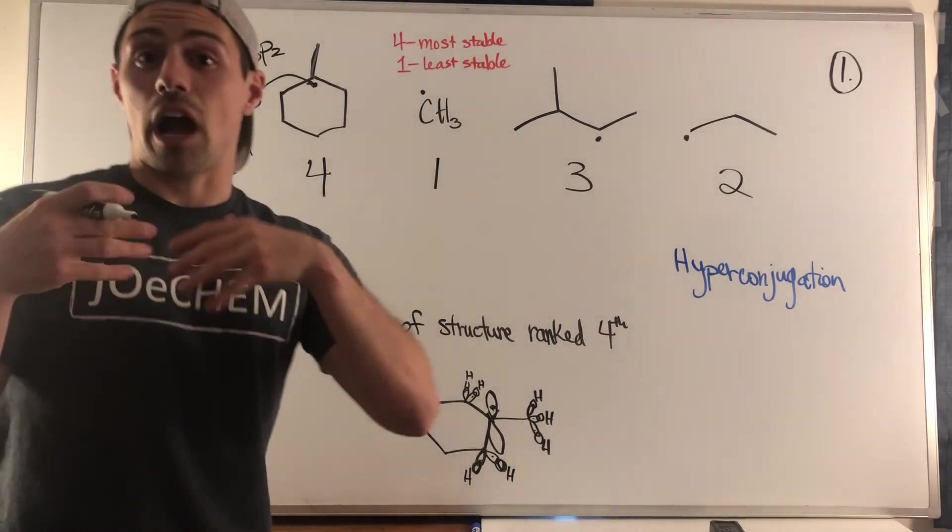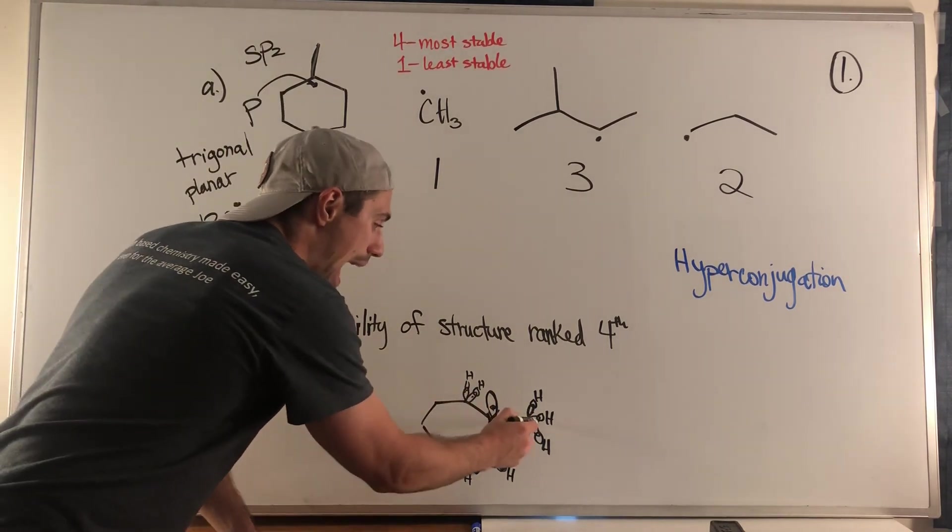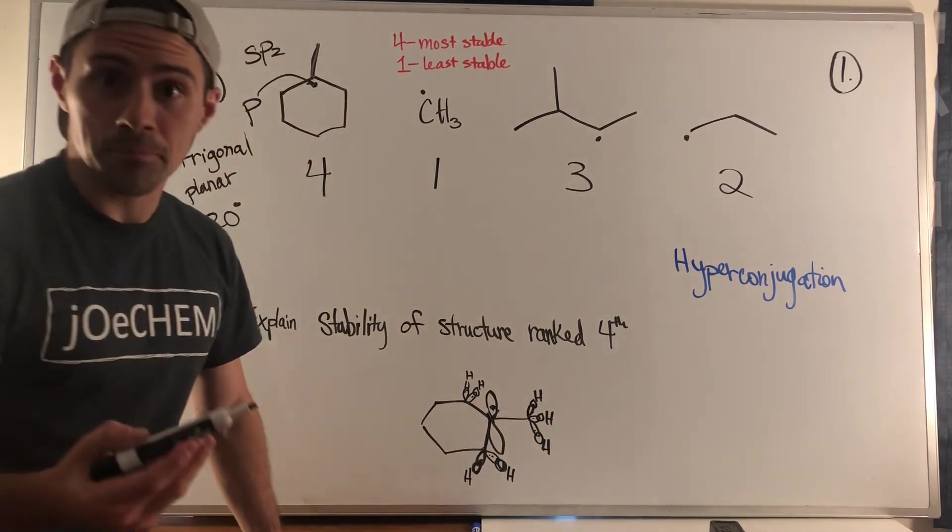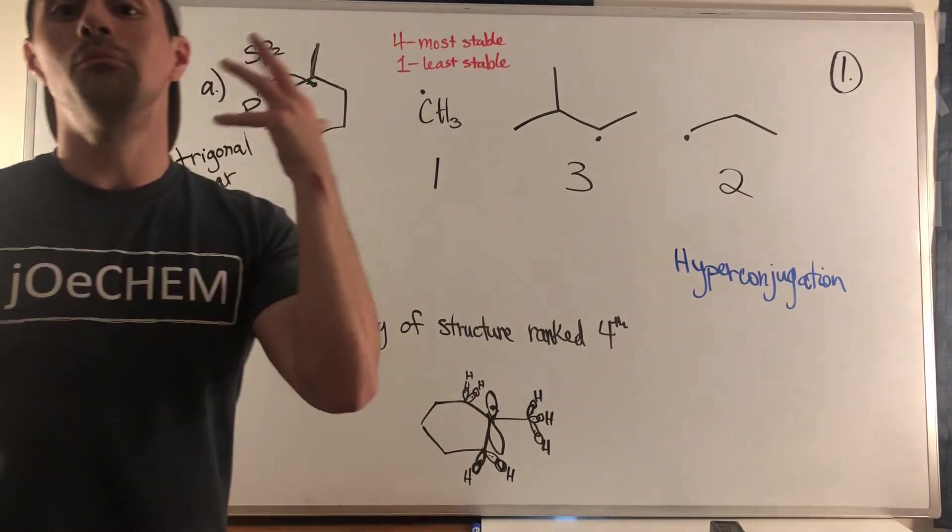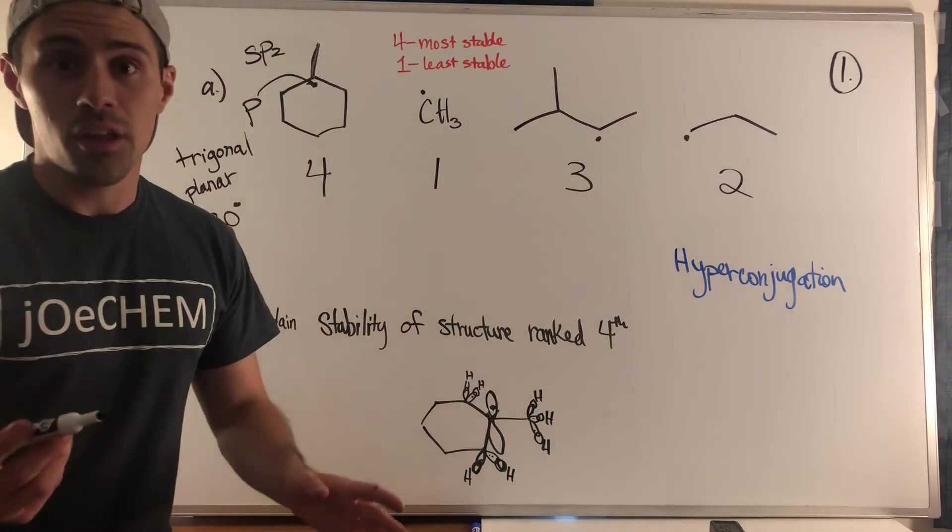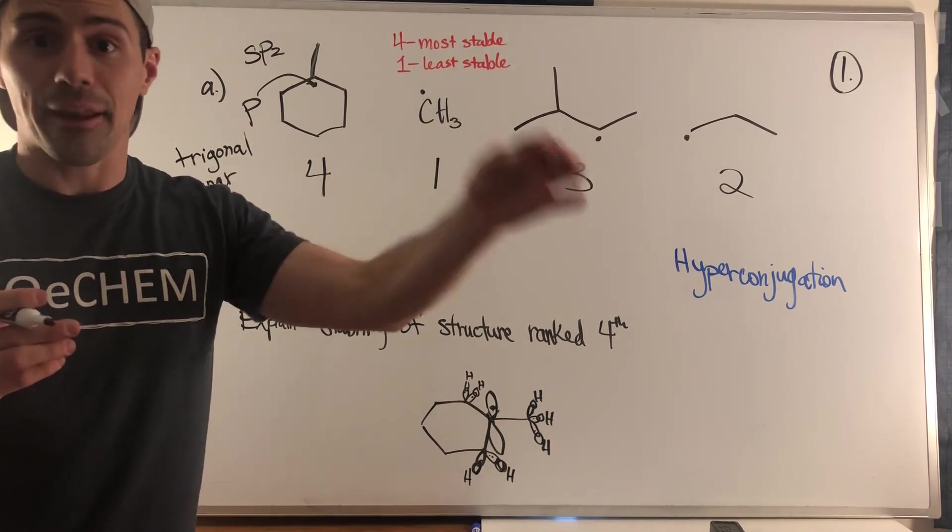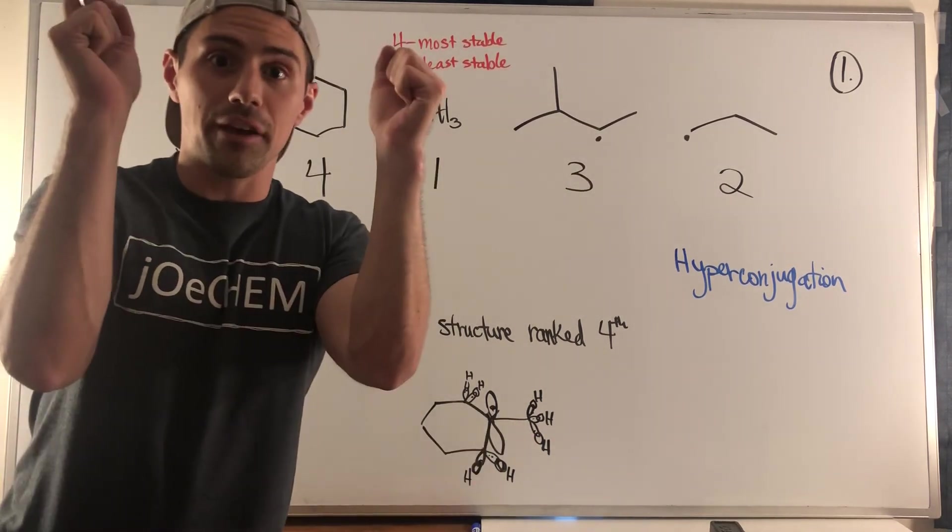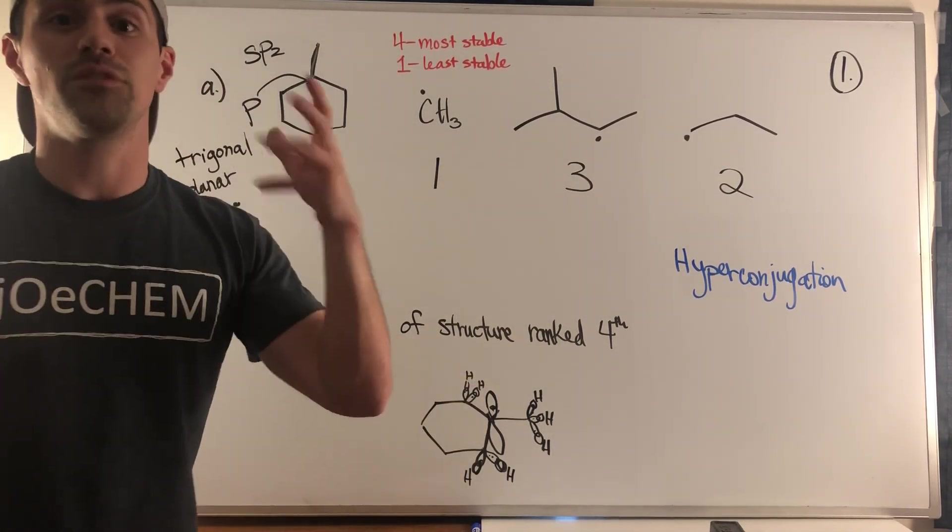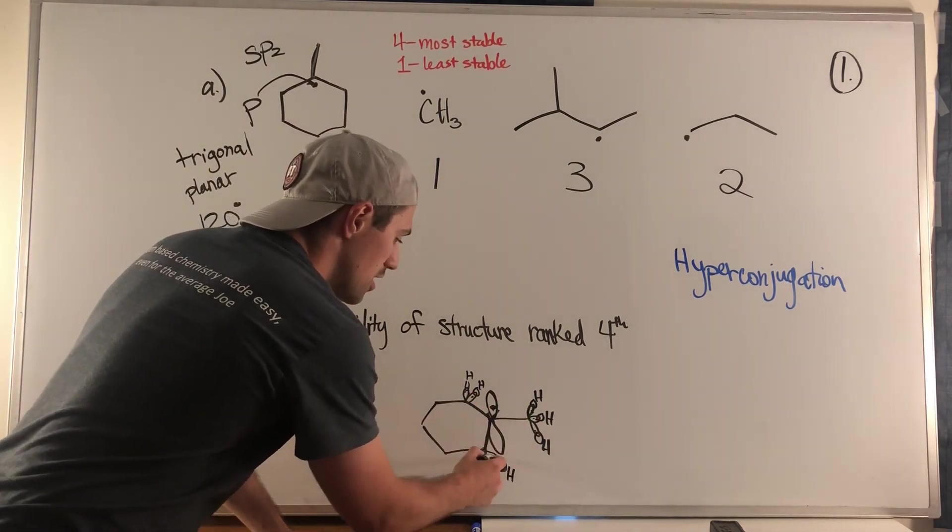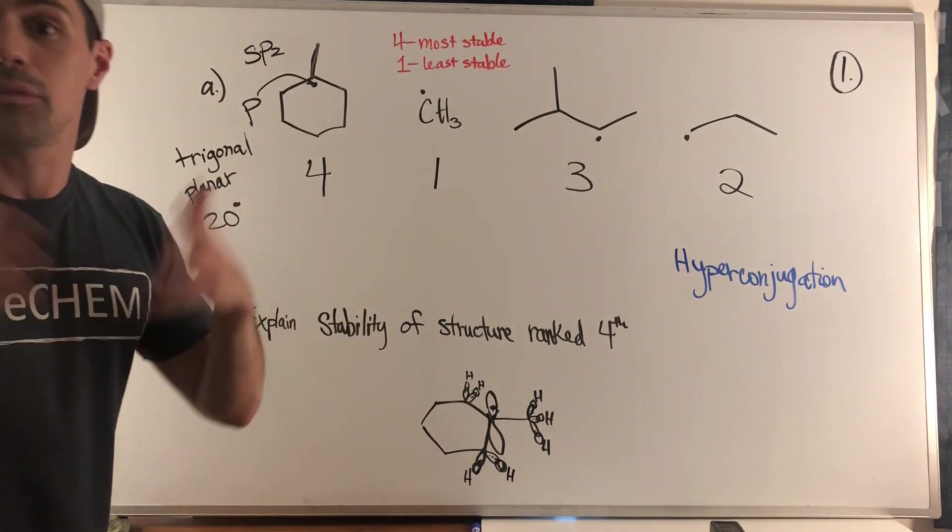And for a split second, any of these bonds, when they do become parallel with this p orbital, it mimics a pi bond. So that provides stability. That's a stabilizing factor. It has a stabilizing effect. So the more of those interactions you have available, the greater chance every given second that they can actually occur and provide stability.